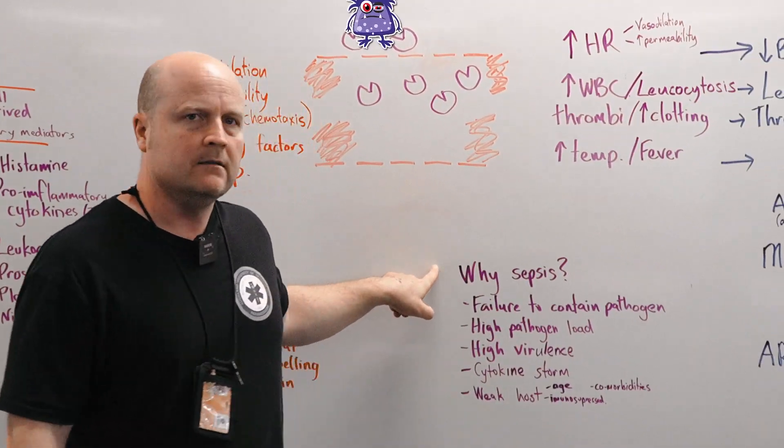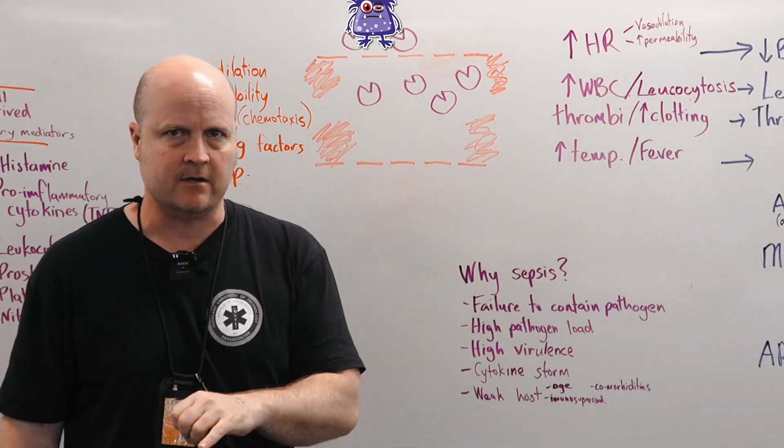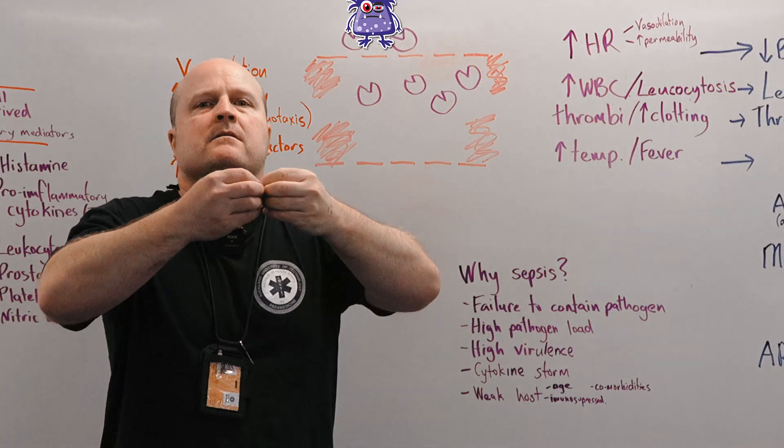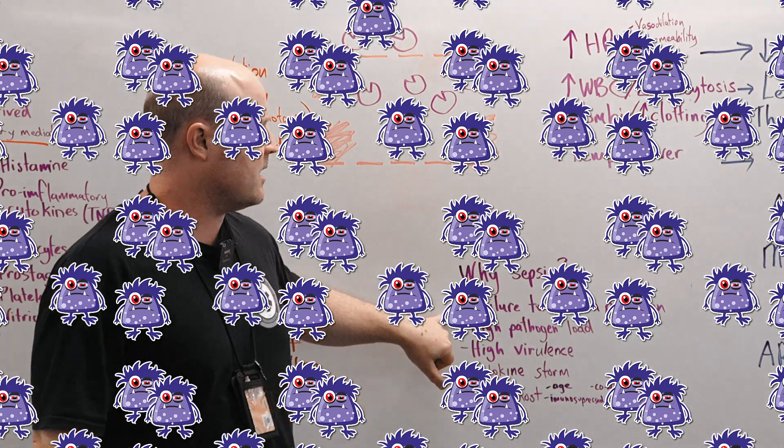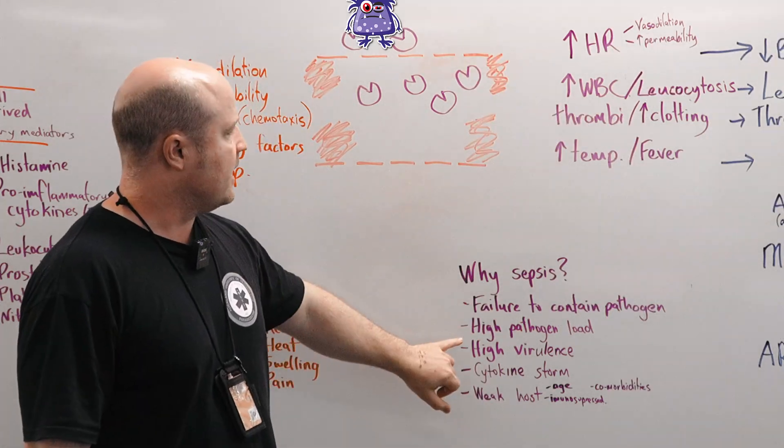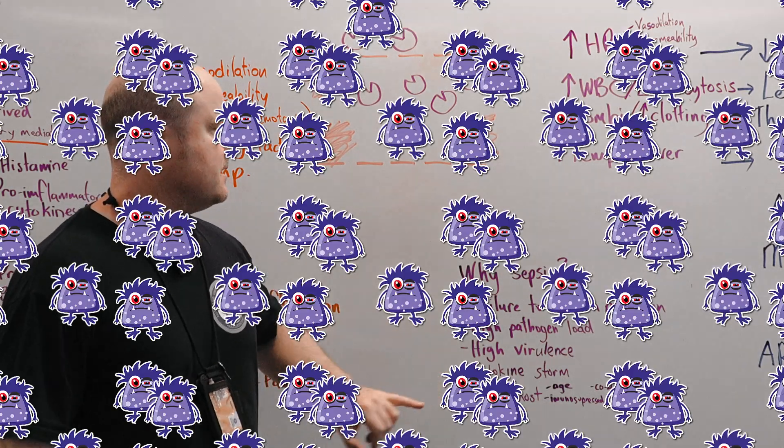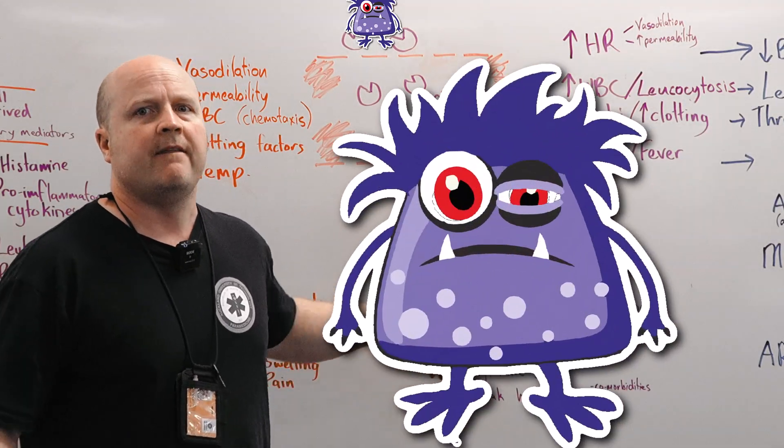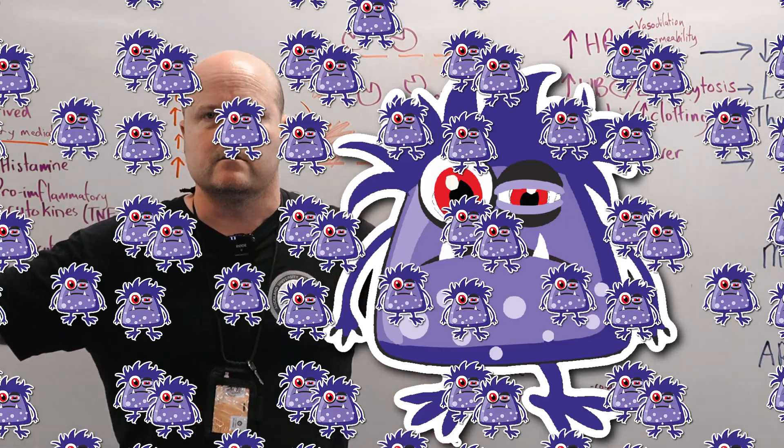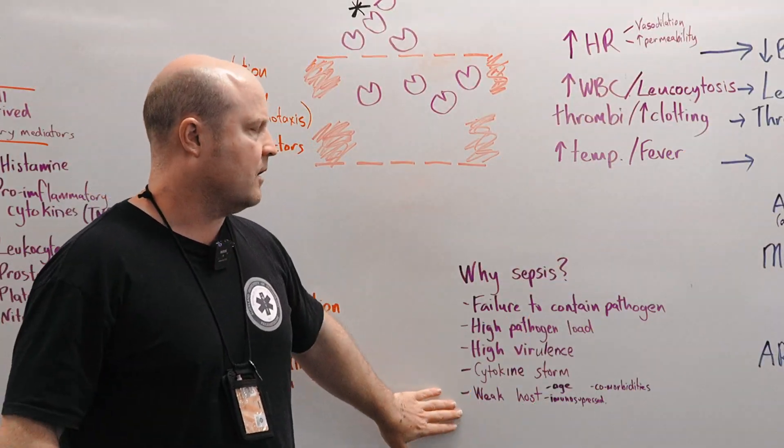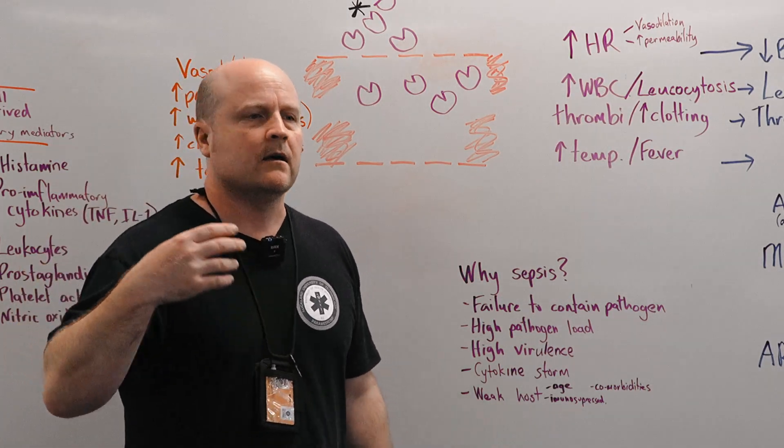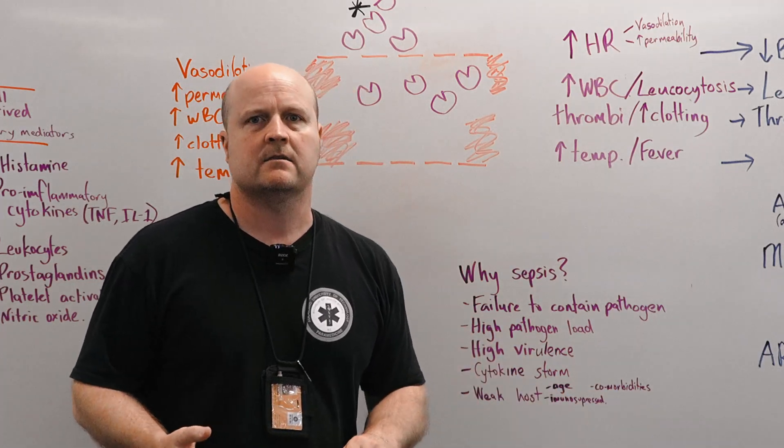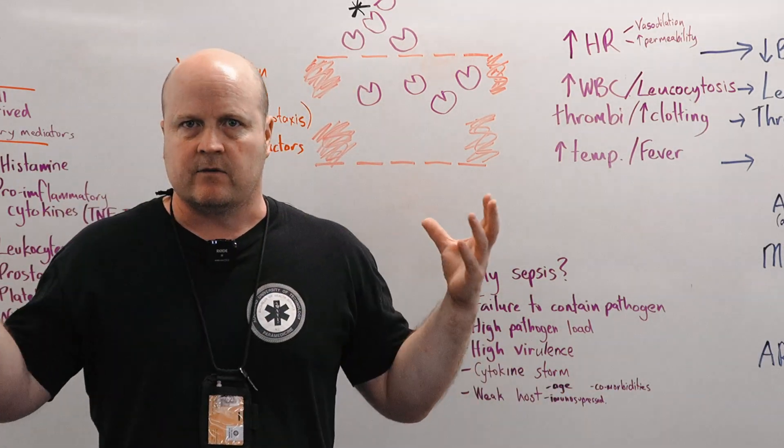Okay so either we have a failure to contain the pathogen and the pathogen then gets systemic and goes throughout the bloodstream and goes everywhere. Or there's a really high pathogen load or high virulence. So either we got lots of baddies or these baddies are really powerful and therefore the pathogen spreads everywhere so we get an inflammatory response everywhere. Or we can have a weak host. So the patient could be weak, they may be old or young, immunosuppressed or have lots of comorbidities.